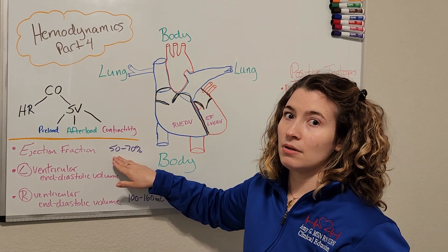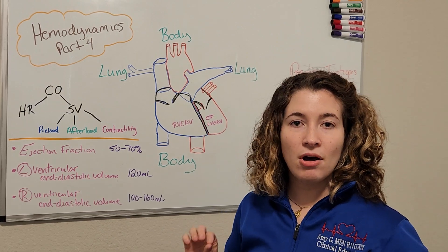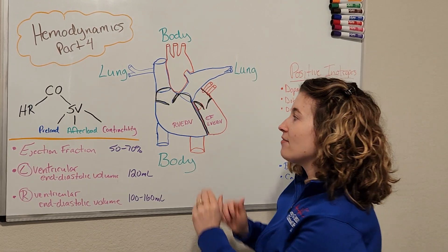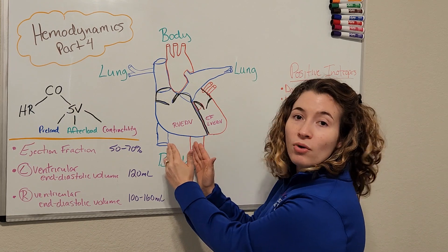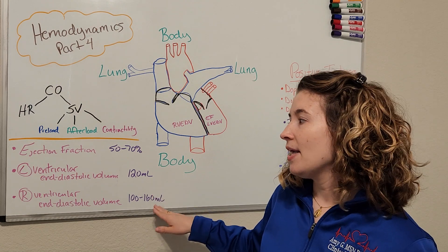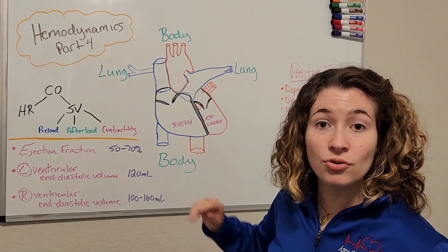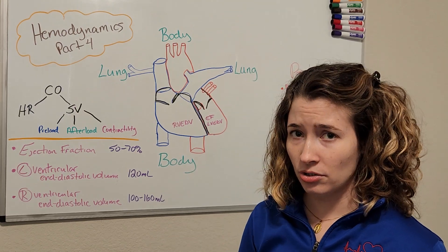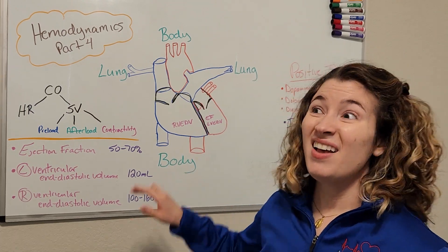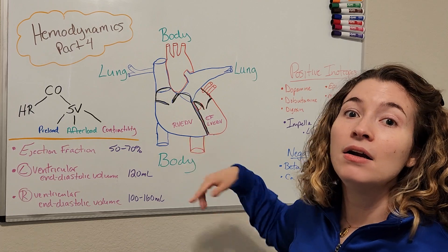We don't want to see that number fall as it can lead to more problems. Now these other two parameters are looking at the end diastolic volume that's left in each of the ventricles before the contraction occurs — left ventricular end diastolic volume and right ventricular end diastolic volume. On the left side, a normal volume would be about 120 mils of blood, and on the right side it can go up to 160. So this is the amount of volume that's left in the ventricles before the contraction occurs. In our patients with heart failure or developing heart failure, you would see this number go up as it represents the ventricles not doing their job properly — more blood is left sitting in there before each contraction.